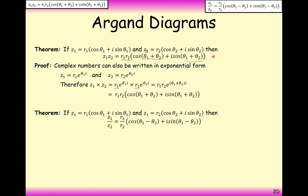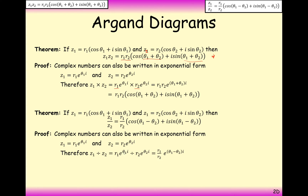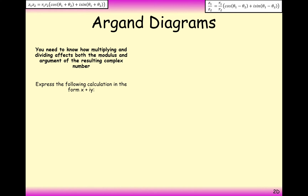The same principle applies to division. If you do Z1 divided by Z2, you divide your moduli but subtract the arguments, because when you divide powers you subtract the indices. So: to multiply complex numbers in modulus-argument form, multiply the moduli and add the arguments; to divide, divide the moduli and subtract the arguments.